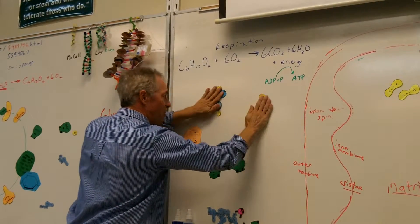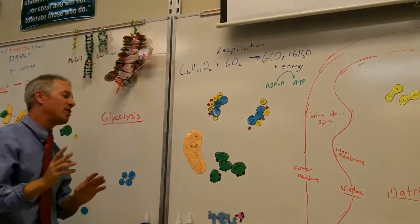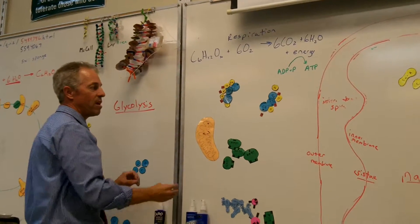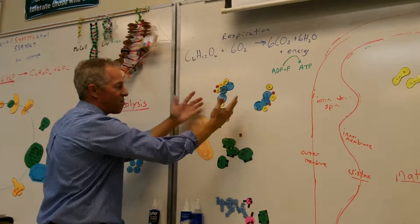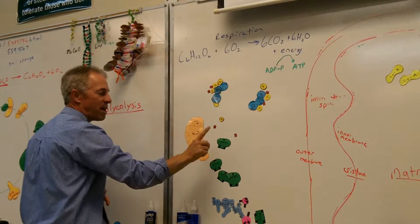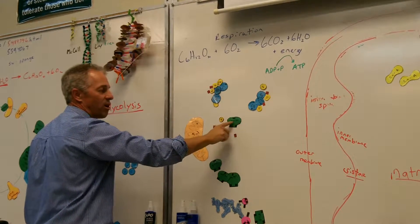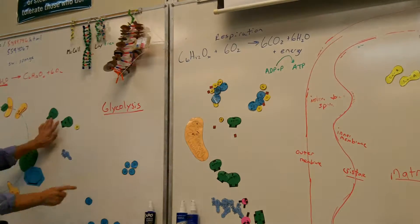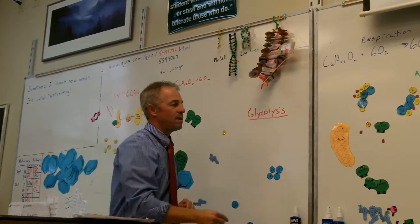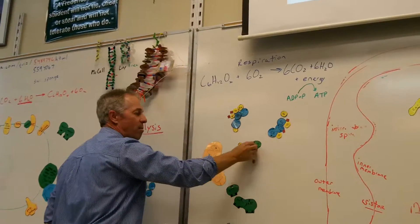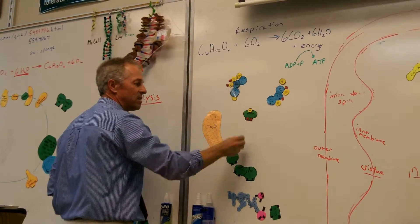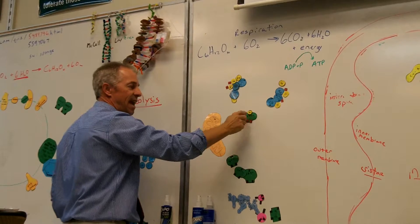There are enzymes that will separate this in half. Whenever we take a big molecule and we break it apart, protons and electrons fly off of the structure. And those protons and electrons are picked up by a carrier molecule called NAD. It's almost like the NADP that we saw in photosynthesis. This NAD is a carrier molecule that picks up electrons and protons and forms a new molecule called NADH.